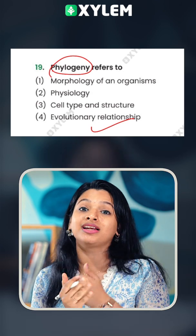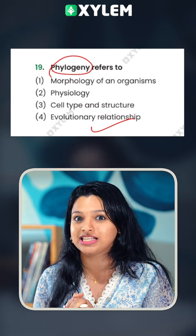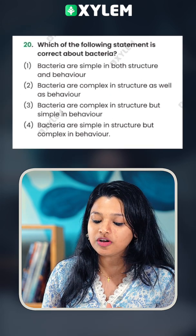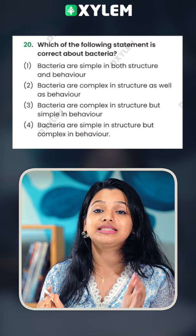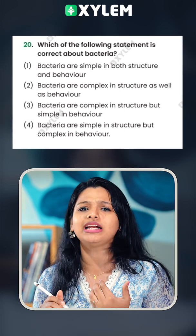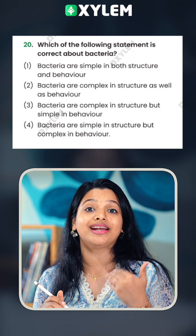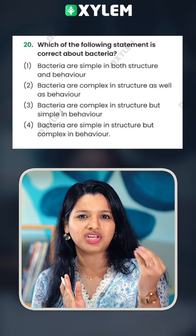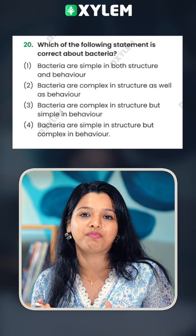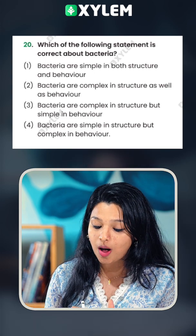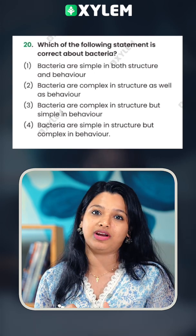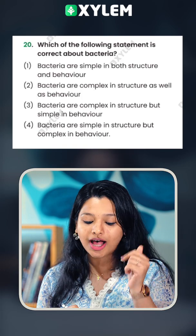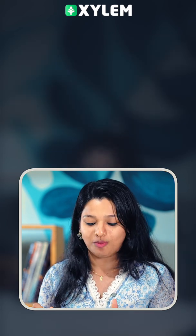Which of the following statements is correct about Bacteria? Bacteria is very simple in structure. Structurally, it is very simple. They are complex in behavior. Metabolically, they are active and communicative. That is the correct option — the fourth option.